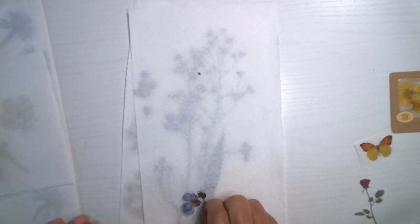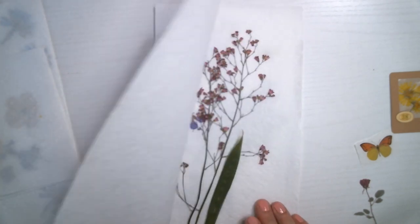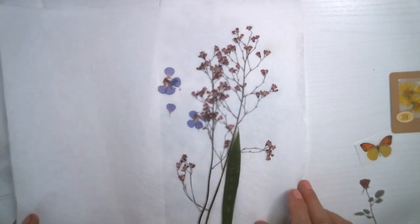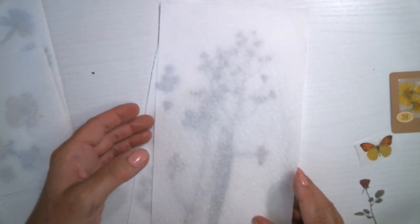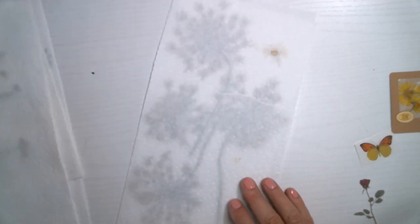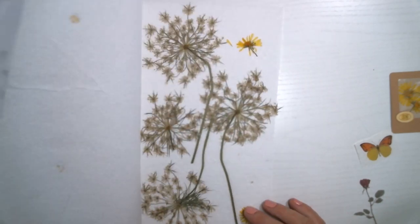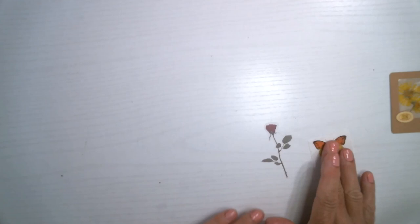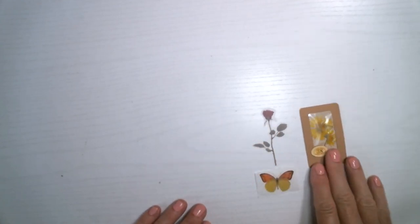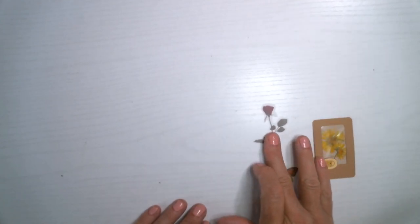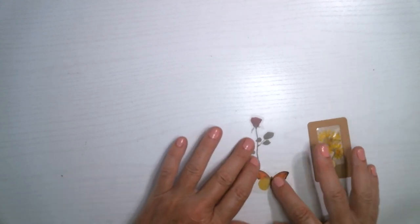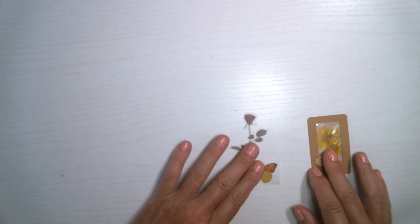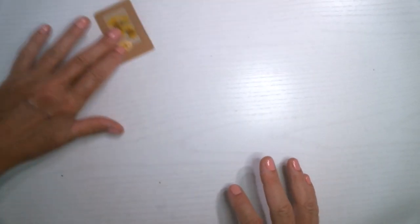So if you live anywhere where there are flowers or leaves, anything you can press that would be fun to use, go grab some. It's super easy to do. So anyway, if you don't have pressed flowers, you could also use stickers inside or magazine cutouts, something you fussy cut out of a magazine or even stamps that you color in.